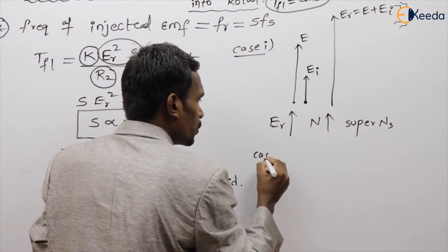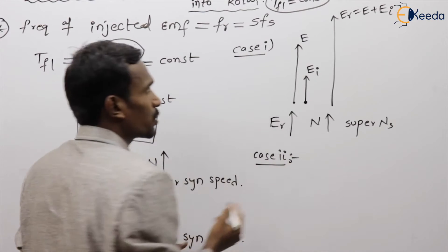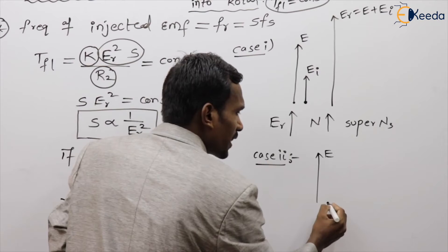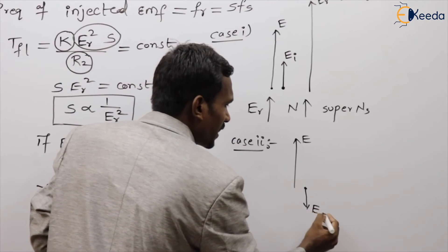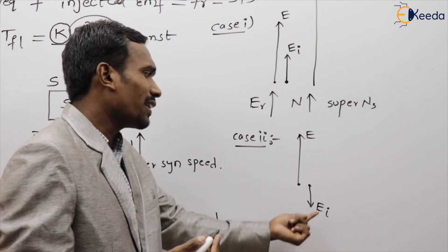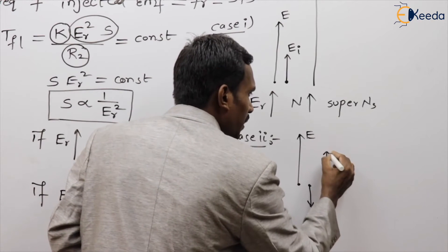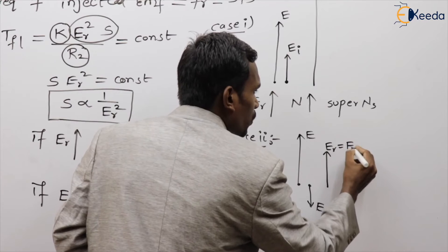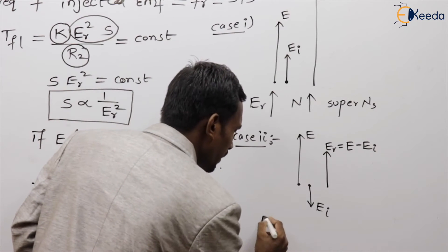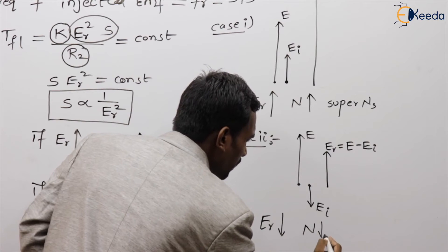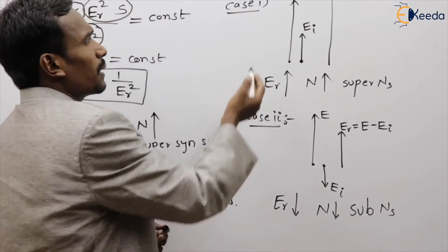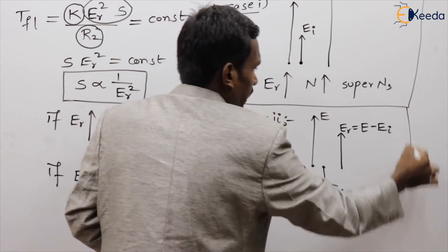Case two: the injected EMF is exactly out of phase with the rotor EMF. For example, if the rotor EMF is 100 volts and the injected EMF is 50 volts, the resultant ER equals the actual EMF minus the injected EMF. So ER decreases, and therefore speed decreases — this is called sub-synchronous speed.